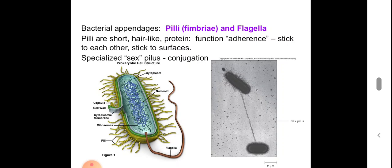Starting from outside, we were talking about bacterial appendages. We can consider pili and flagella as the bacterial appendages. Pili are also known as fimbriae. Pili are of two types: the small pili are known as fimbriae, and the other pili which is involved in conjugation is known as sex pili. Pili are short hair-like structures seen on the surface of the bacterial cell, used for adherence — to stick to each other and to surfaces.